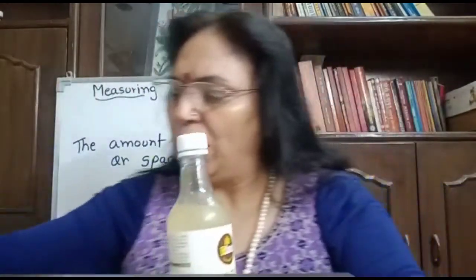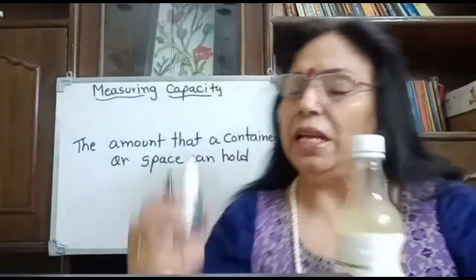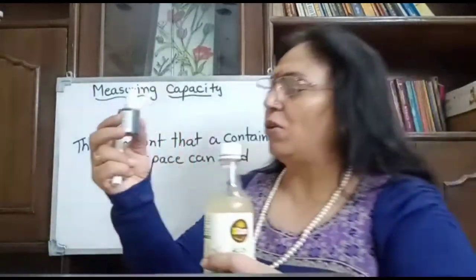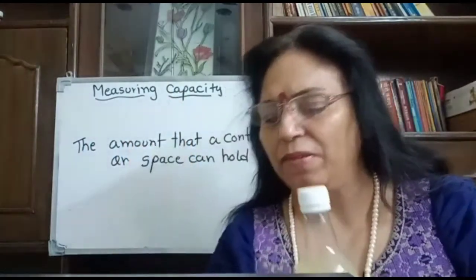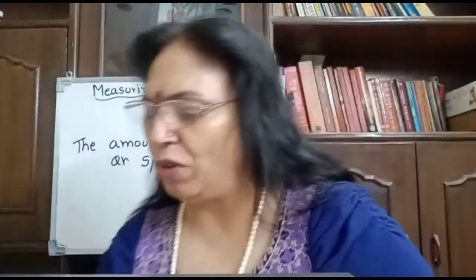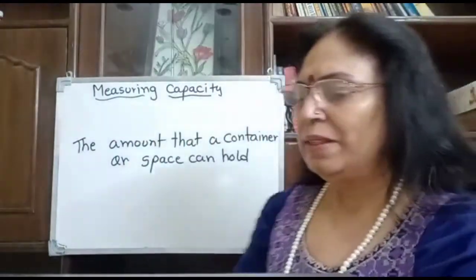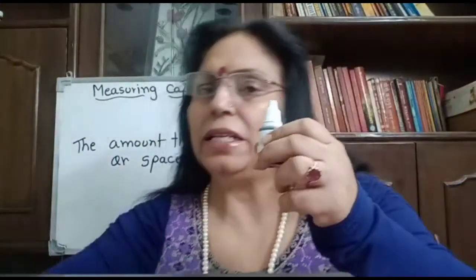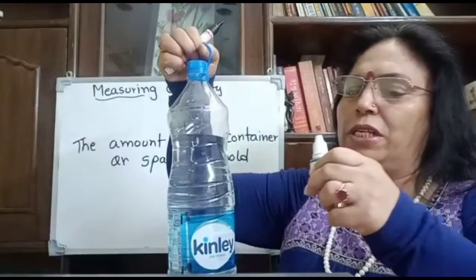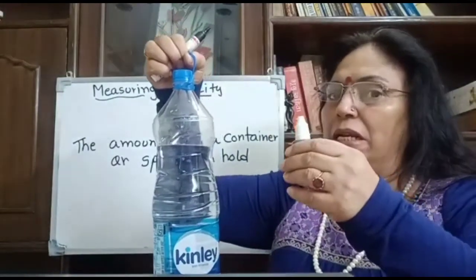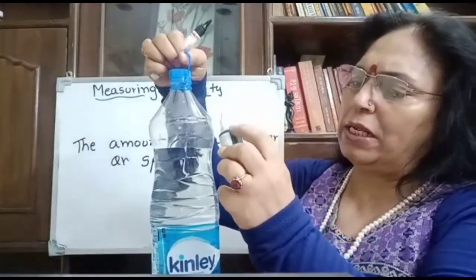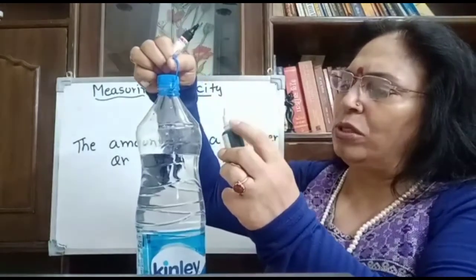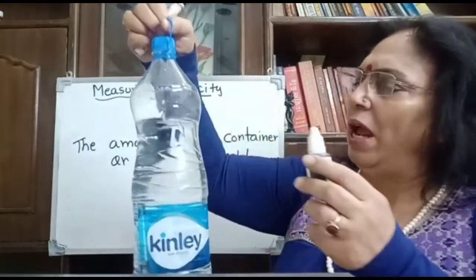So we have units: milliliter for the smallest amount, and then we have liter. We have two units for capacity — milliliter and liter. Here it is a bottle of 2 liters, and here it is milliliter. So for smaller content we will use milliliter, and for bigger content we will use liter.